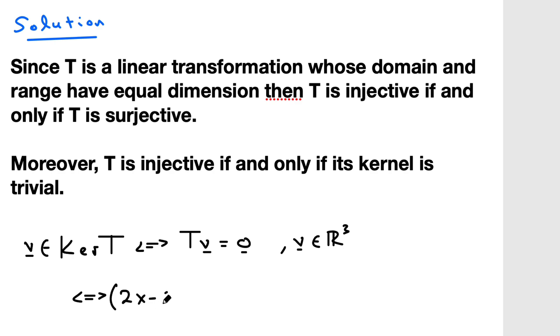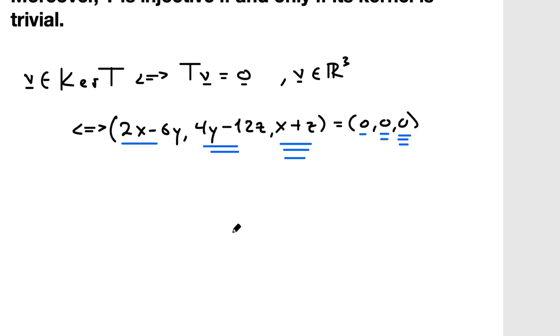And let's see what that means. Well, if V is XYZ, that means that 2X minus 6Y, 4Y minus 12Z, X plus Z is equal to zero. So the question is if there's only the trivial solution. So that's if and only if 2X minus... So we're calculating the kernel. Okay. If the kernel is zero, zero is always in the kernel of a linear transformation. T of zero is always equal to zero.